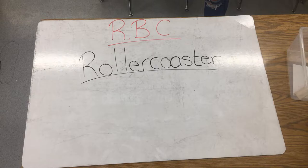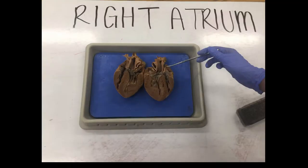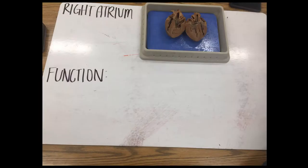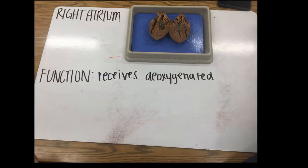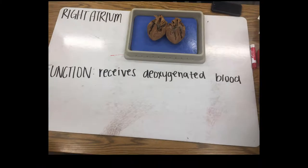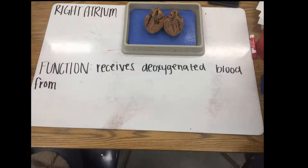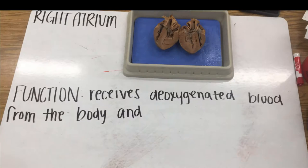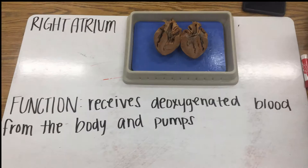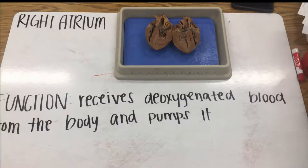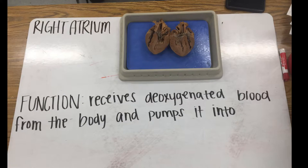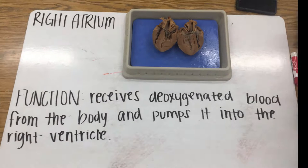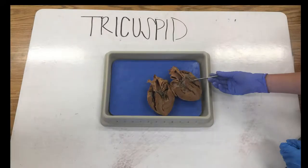First, we'll start at the right atrium, the upper right chamber of the heart. It is used to pump deoxygenated blood from the body into the right ventricle. But before the blood reaches the right ventricle, it must go through the tricuspid valve.